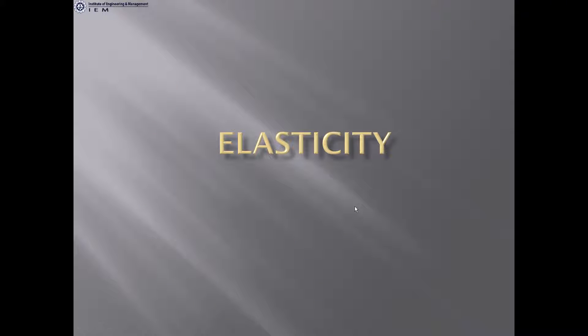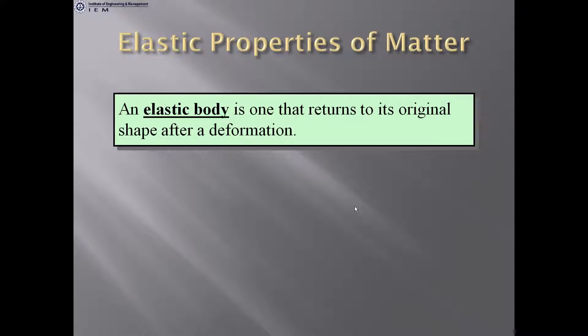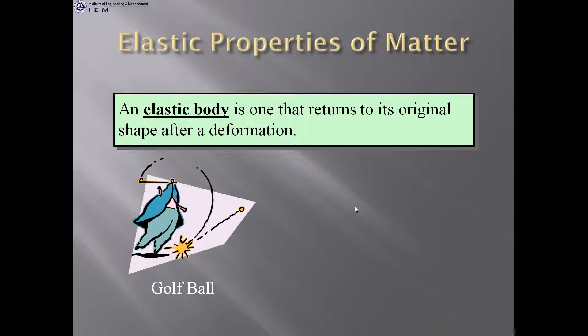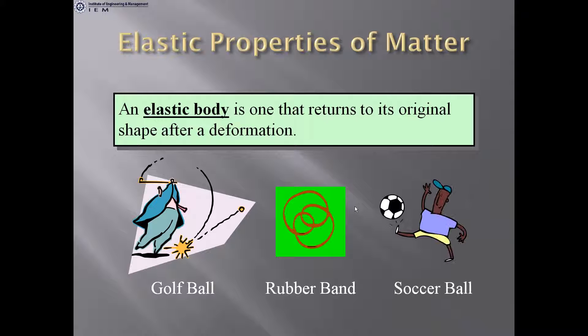Elasticity. Elastic properties of matter. An elastic body is one that returns to its original shape after the deformation. Examples include a golf ball, rubber band, or soccer ball — these are elastic bodies.